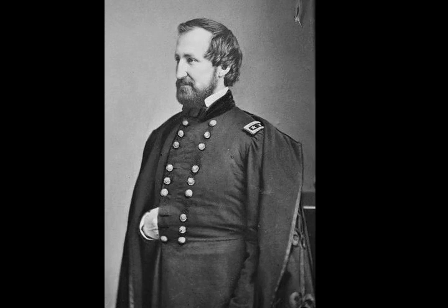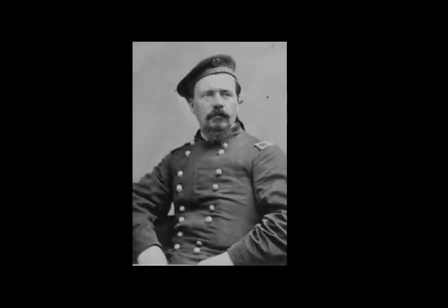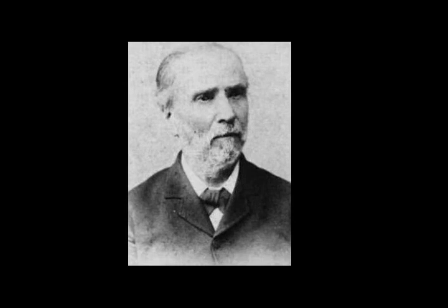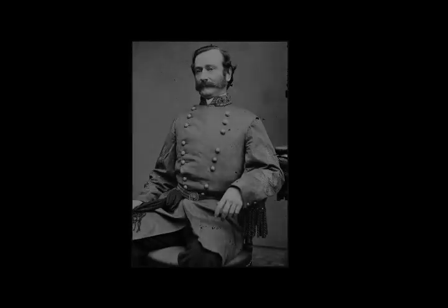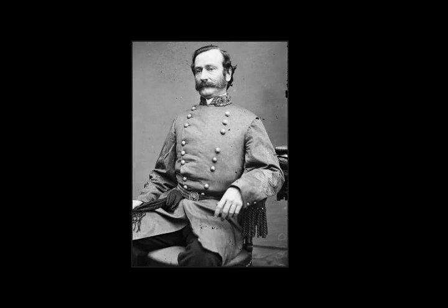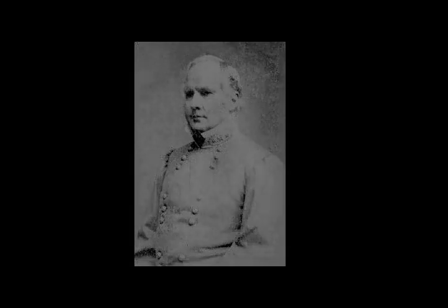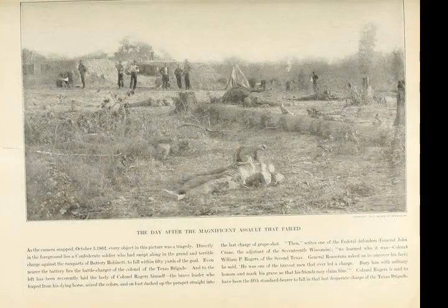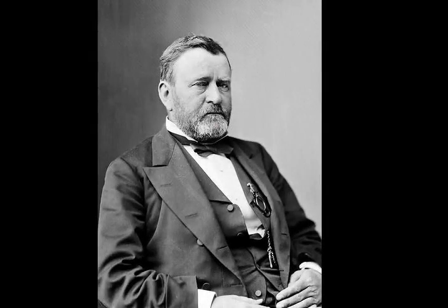As Confederate General Braxton Bragg moved north from Tennessee into Kentucky in September 1862, Union Major General Don Carlos Buell pursued him from Nashville with his Army of the Ohio. Confederate forces under Van Dorn and Price in northern Mississippi were expected to advance into Middle Tennessee to support Bragg's effort, but the Confederates also needed to prevent Buell from being reinforced by Major General Ulysses S. Grant's Army of the Tennessee. At the Battle of Iuka on September 19, Major General Sterling Price's Confederate Army of the West was defeated by forces under Grant's overall command, but tactically under Rosecrans, the commander of the Army of the Mississippi. Price had hoped to combine his small army with Major General Earl Van Dorn's Army of West Tennessee and disrupt Grant's communications, but Rosecrans struck first, causing Price to retreat from Iuka.